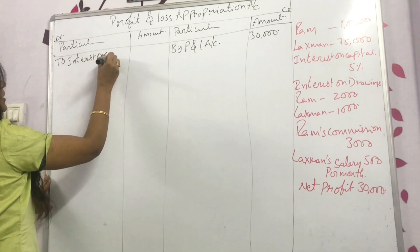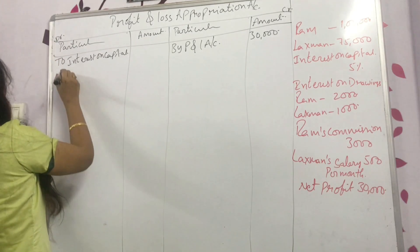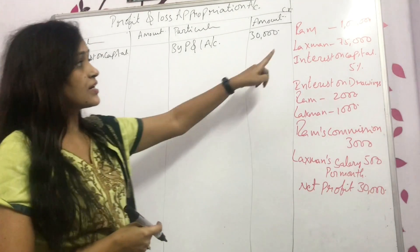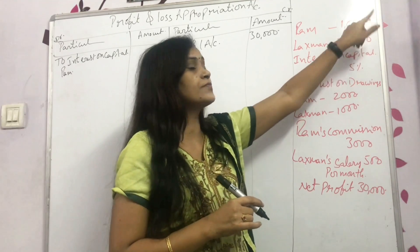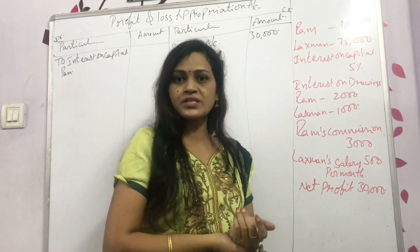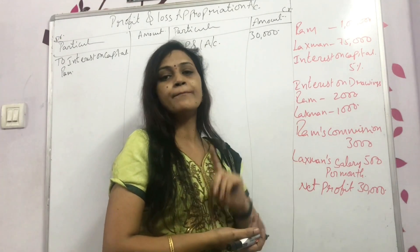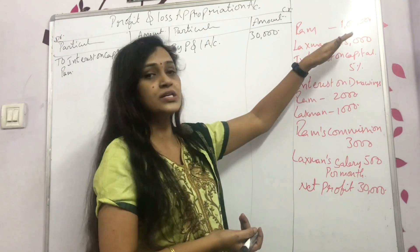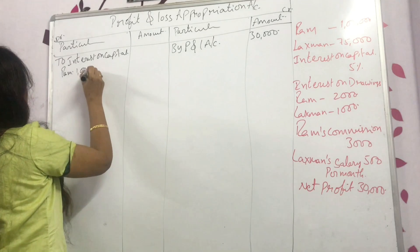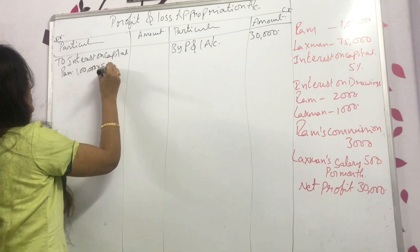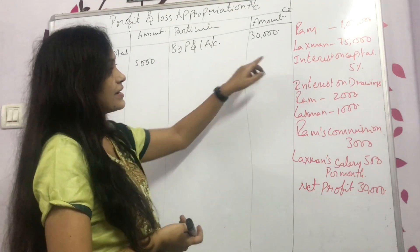Interest on capital — Ram's amount is not given directly. He invested one lakh; they didn't mention when, so we treat it as used for the whole year. The whole year calculation: one lakh at 5% gives 5,000.